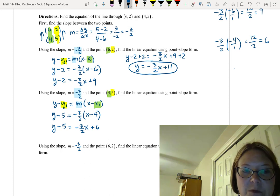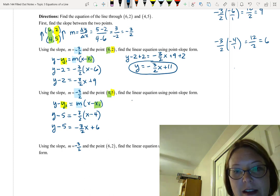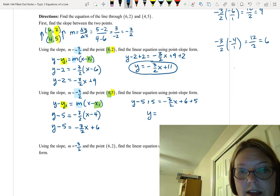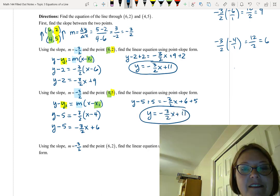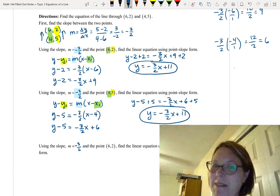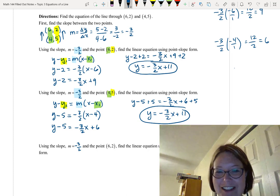And finally, we need to move the negative 5. So to do that, we're going to add 5 to both sides. That's y minus 5 plus 5 equals negative 3 halves x plus 6 plus 5, leaving us with y equals negative 3 halves x plus 11. Look at that. Same result using the other point. That should make sense because both points are on the line.